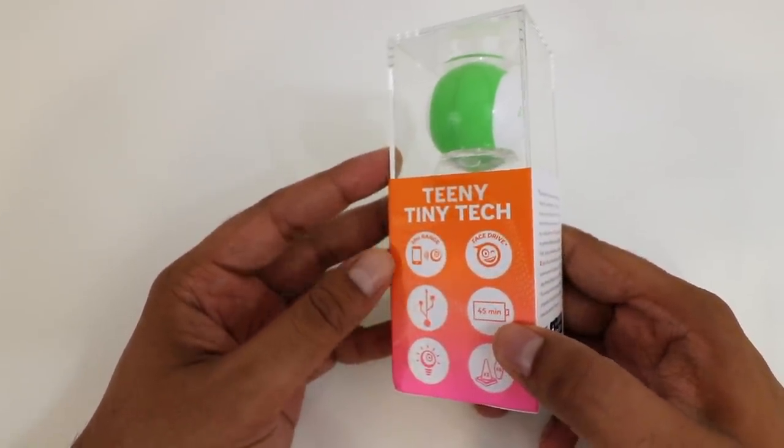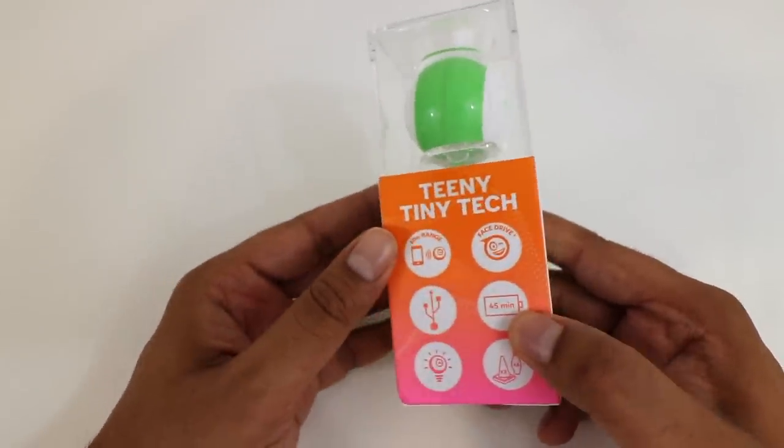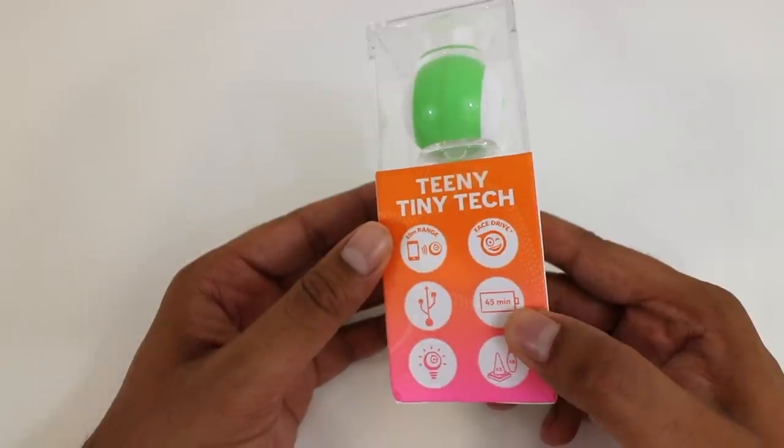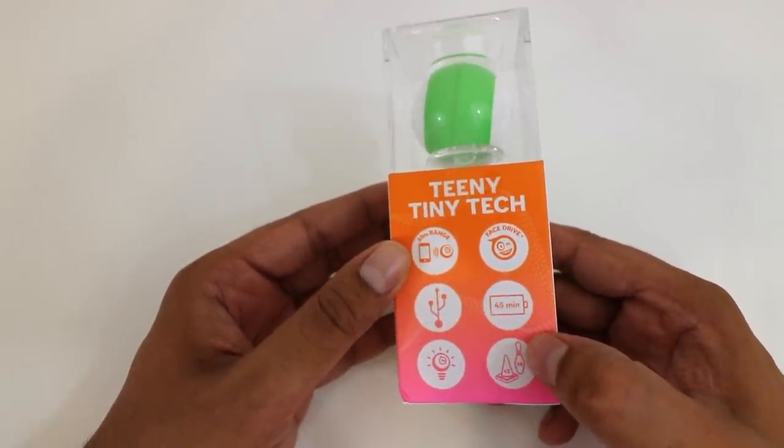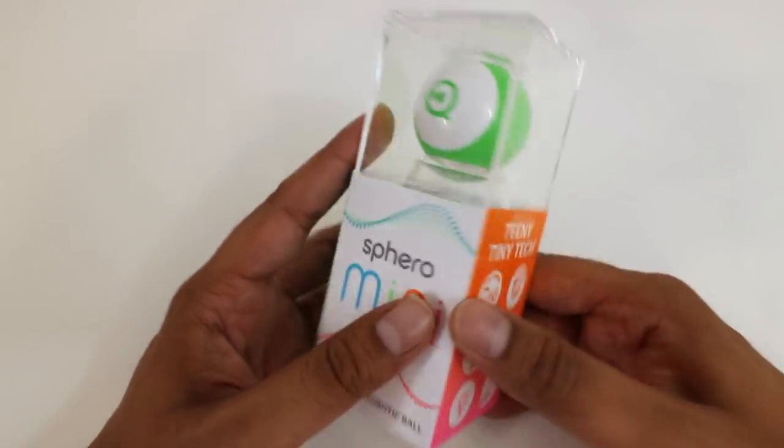In the back here it kind of talks about it in a little bit more detail. And over here it talks about what you can do. So it does have a 10 meter range. You have a face drive mode which allows you to use your face to control the robot. Then you can charge it and play it with different pins if you buy them and it's got a 45 minute battery life. So let's go ahead and open this up.